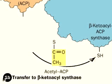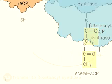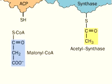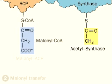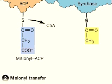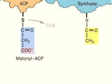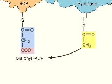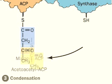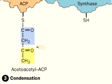The acetyl group is passed temporarily to a synthase enzyme in step 1, and then malonyl-CoA binds the ACP, forming malonyl-ACP and releasing CoA in step 2. In step 3, the acetyl group from the synthase condenses with the malonyl-ACP, which releases a molecule of carbon dioxide.